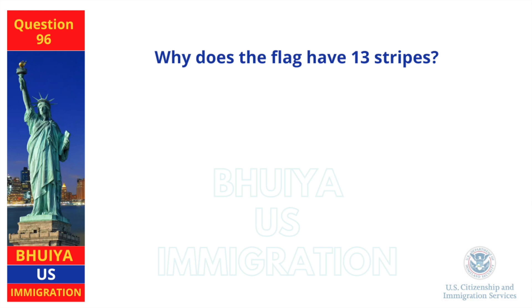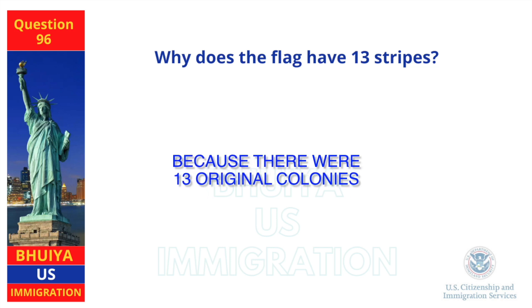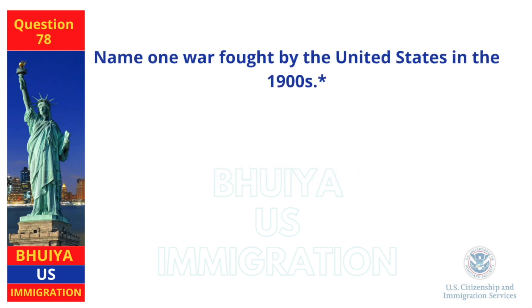Why does the flag have 13 stripes? Because there were 13 original colonies. Name one war fought by the United States in the 1900s. World War I.